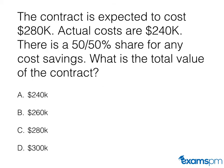Now let's move on to our next question. The contract is expected to cost $280,000. Actual costs are $240,000. There is a 50-50 share for any cost savings. What is the actual value of the contract? Feel free to pause this video, work out the math, and then play when you're ready.